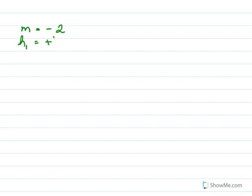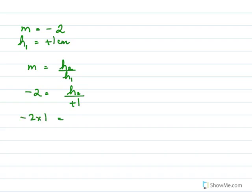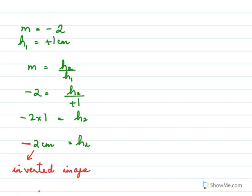In the previous problem, magnification was −2 and object height h1 = 1 cm. Using magnification = h2/h1: −2 = h2/1, so h2 = −2 centimeters. The negative sign confirms the image is inverted. When writing the answer, state height of image = 2 centimeters, inverted — do not write minus 2 centimeters.